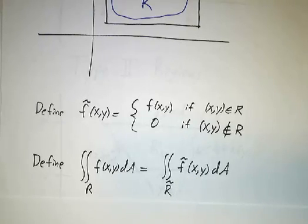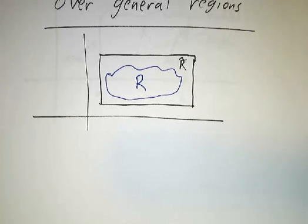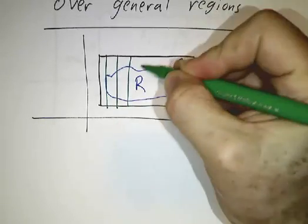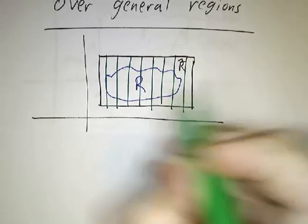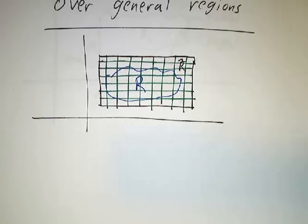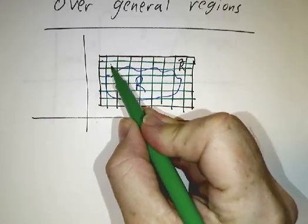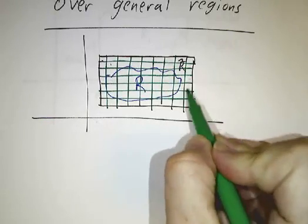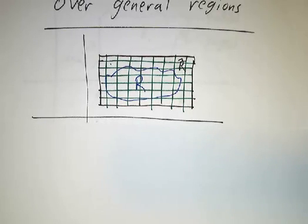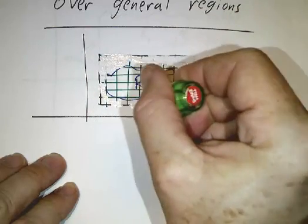We define the integral of f over the general region as the integral over r-twiddle of f-twiddle. That's how you define double integrals over general regions. Going back to integrating over a rectangle, we chop the rectangle into boxes, take the value of the function in each box times the area of the box, add them up, and take a limit. Now f-twiddle is zero outside r, so all the boxes outside r contribute exactly zero. The big region r-twiddle is needed for a precise definition, but for our purposes it may as well not be there.